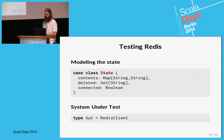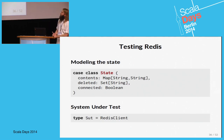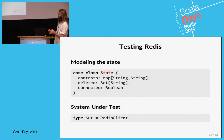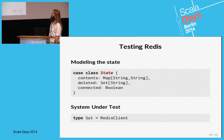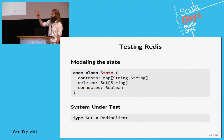The first example is testing the database Redis. If we want to test it, we create a state that looks like this: it has contents modeling the database — a key-value store, just a map. We also store all keys that have been deleted, that have at some point existed in the database.